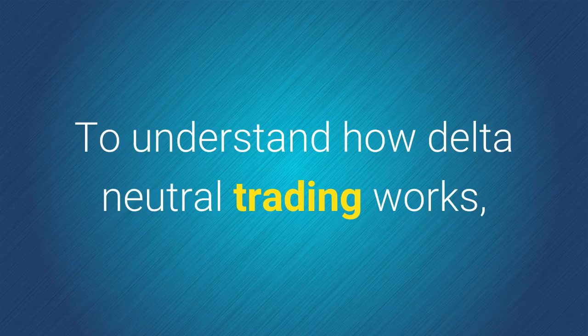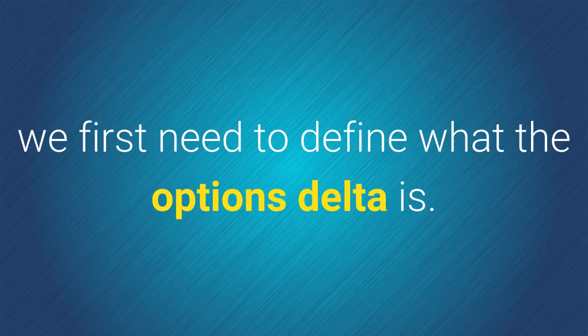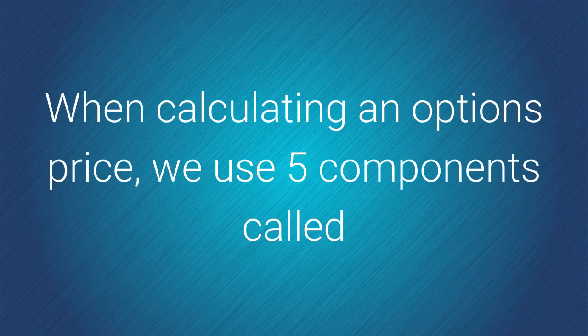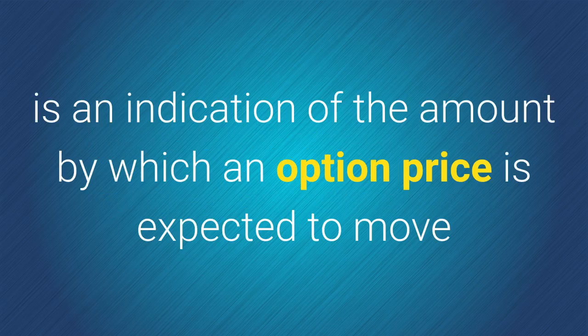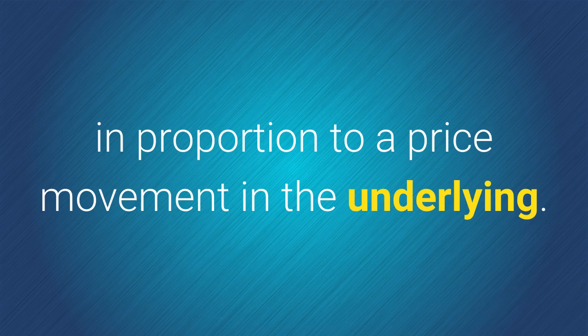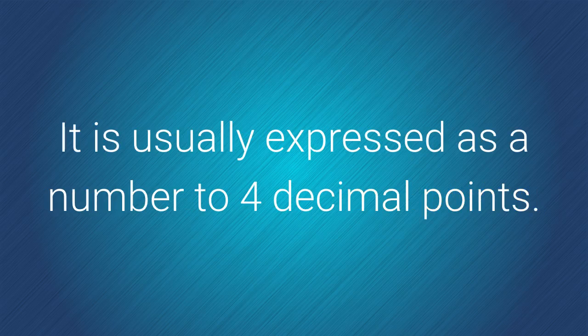To understand how delta neutral trading works, we first need to define what the options delta is. When calculating an options price, we use five components called the Greeks. The delta is one of these Greeks and, simply put, is an indication of the amount by which an option price is expected to move in proportion to a price movement in the underlying. It is usually expressed as a number to four decimal points.